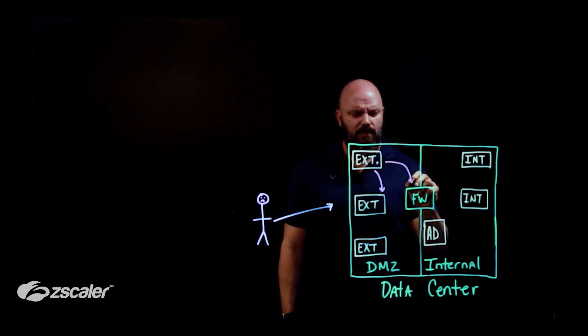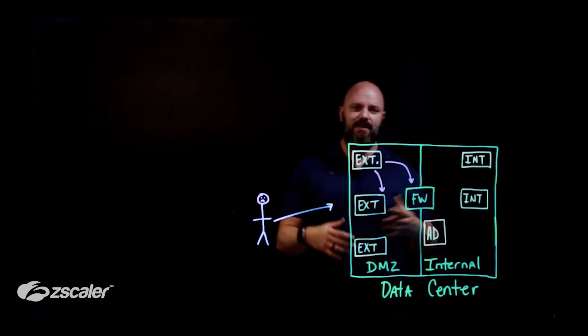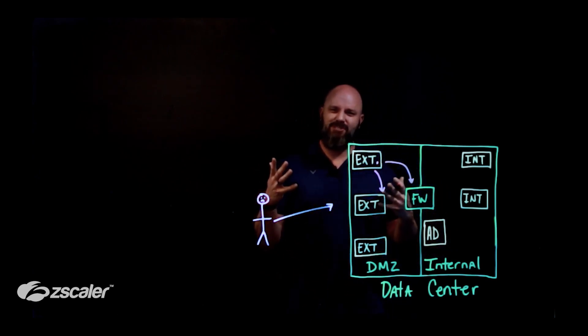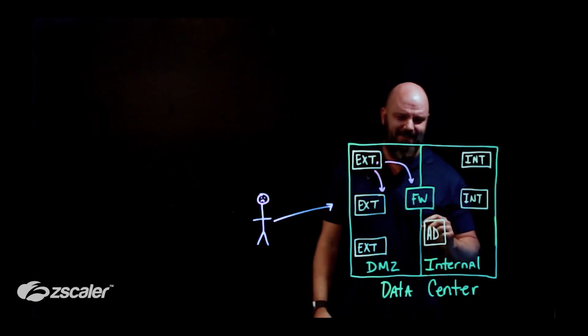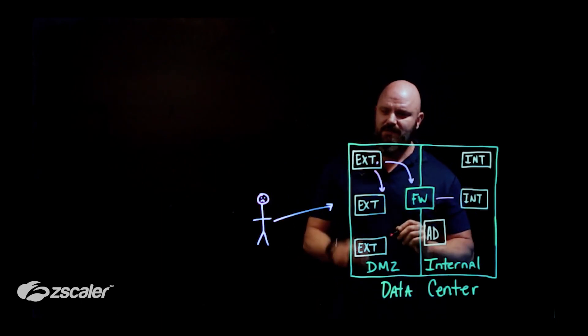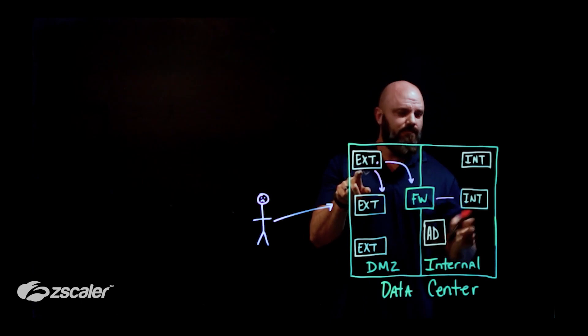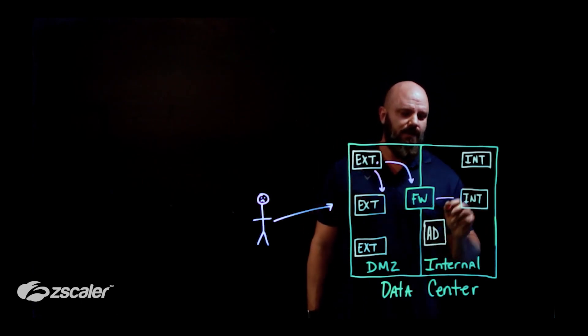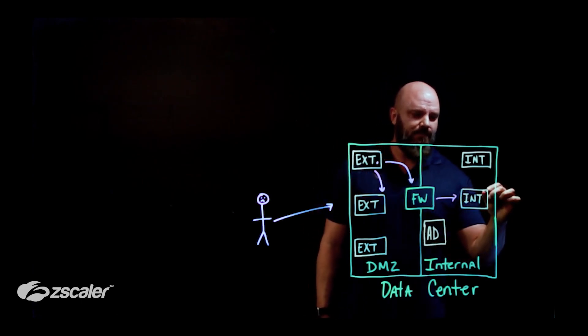This is where firewalls fall over. Yeah, they allow good and bad traffic, but should they be allowing that bad traffic at the end of the day? So maybe there's connectivity between this external web server and this internal one as well. That can't be good.